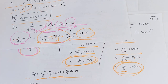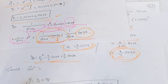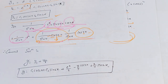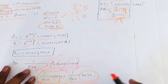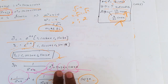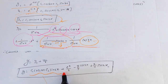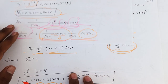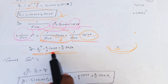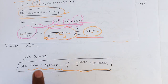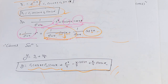So, this is y = yc + yp. The solution will be done. yc is done. yp is done. The final solution is y = yc + yp. Simple.